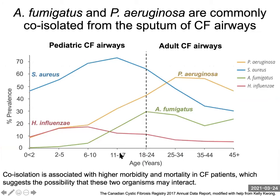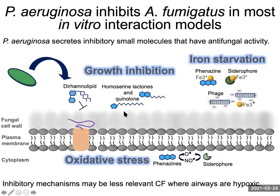We know that the cystic fibrosis airways are successively colonized by nine pathogens over the lifetime of the patient. In adult CF patients, the most commonly isolated bacterium is Pseudomonas aeruginosa, and the filamentous mold Aspergillus fumigatus. Co-isolation of these organisms is associated with worsened outcomes in these patients, and it is well known that this bacterium and fungus form biofilms in vivo, a process that I'll return to later in my talk.